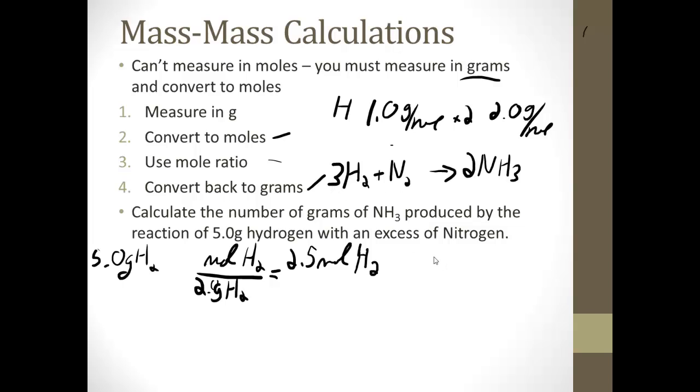So our moles of hydrogen cancel, and that'll give us 2.5 times 2 moles of NH3 divided by 3. So we end up with 5 over 3, which is 1.67 moles NH3. So we used our mole ratio, now we're ready to convert back to grams.